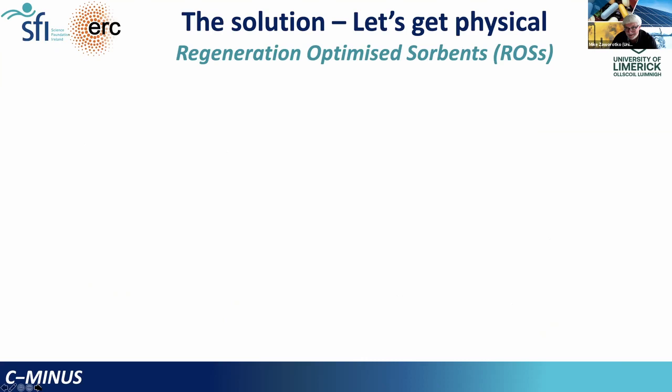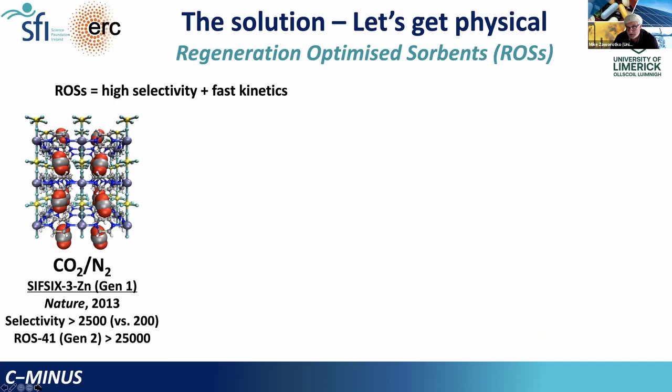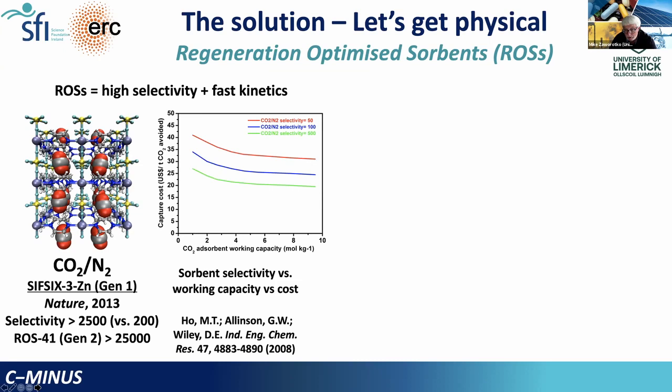The solution is to go physical. A disruptive approach would be to use physisorption — what we're calling regeneration optimised sorbents, or ROS materials. The first material we've retroactively called a ROS material is ROS1, reported in 2013. It set a new benchmark for CO2/N2 selectivity by an order of magnitude. This value has been surpassed in second generation ROS materials, also by an order of magnitude. Selectivity is important — it's one of three key performance parameters that define the cost of DAC, along with kinetics and working capacity.